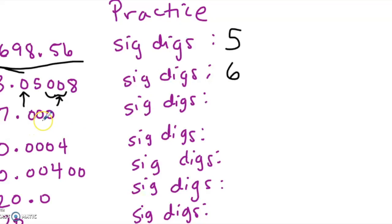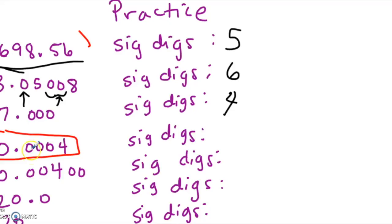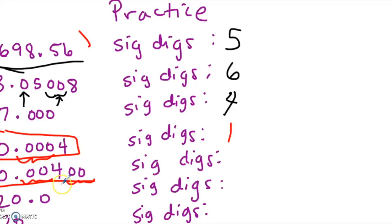Next, 7.000 — all measured zero digits are significant. Since there is a decimal, the trailing zeros are significant, giving 4 sig figs. For 0.0004, it has a decimal but those zeros serve as placeholders, so they are not significant — only 1 significant digit. What about 0.00400? The first two zeros are placeholders and not significant, but the two trailing zeros after 4 are significant, so this number has 3 significant digits.